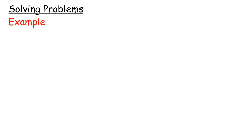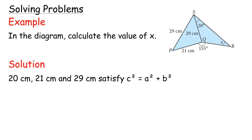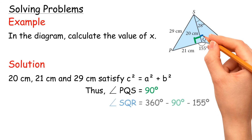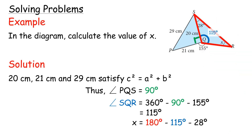Solving Problems. In the diagram, calculate the value of x. 20 centimeters, 21 centimeters, and 29 centimeters satisfy c² = a² + b². Thus, angle PQS = 90 degrees. Angle SQR = 360° − 90° − 155° − 28° = 37 degrees... Angle SQR equals 115 degrees.